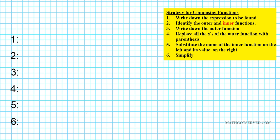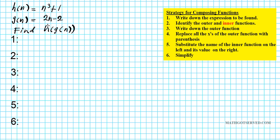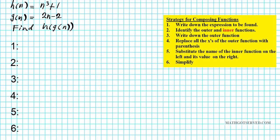Let's take a look at problem number 3. For problem 3, what if we have the outer function h of n equals n to the third plus 1, and the inner function g of n equals 2n minus 2, and we're to find h of g of n. Following the strategy listed on the right, we're going to proceed to write down the expression we're looking for: h composed with g of n.